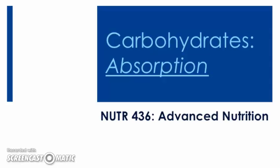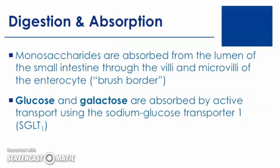The carbohydrate components involved in the process of absorption are the monosaccharides: glucose, galactose, and fructose. These are absorbed by the villi and microvilli of the small intestine, also known as the enterocyte. Glucose and galactose are absorbed via active transport, therefore requiring ATP, through the Sodium Glucose Transporter 1, or SGLT1.